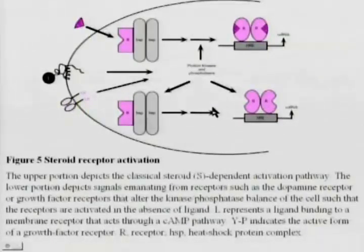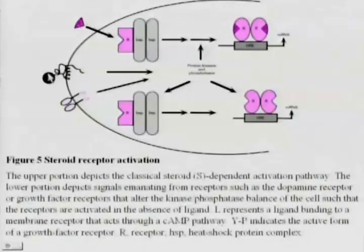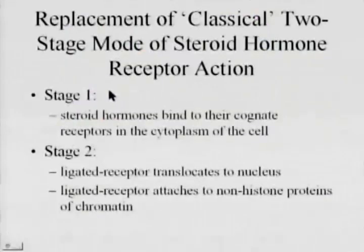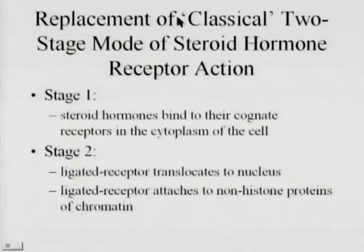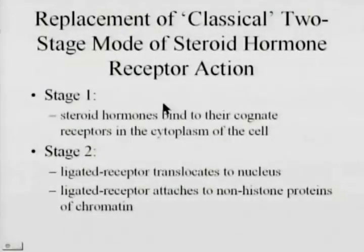One of the pathways noted is ligand binding to a membrane receptor activating a cyclic AMP pathway, a pathway we're already familiar with. We won't comment further on that aspect of steroid receptor function. We'll go back to consider the classical two-stage mode of hormone receptor action, which of course is being modified as we gather new information on the molecular mechanisms for activating these steroid hormone receptors.